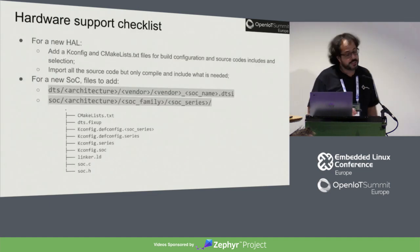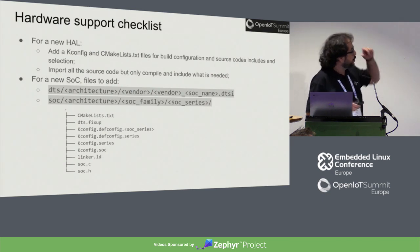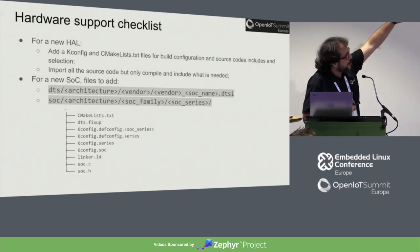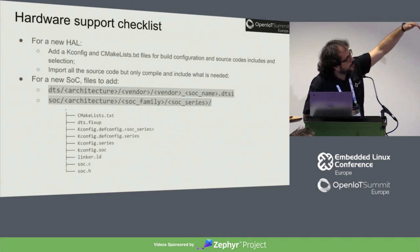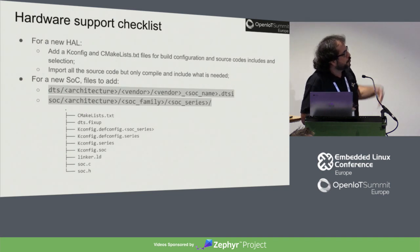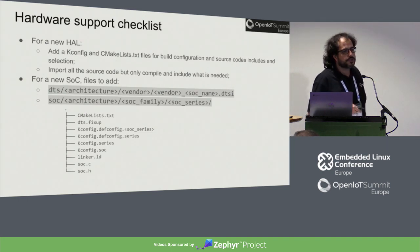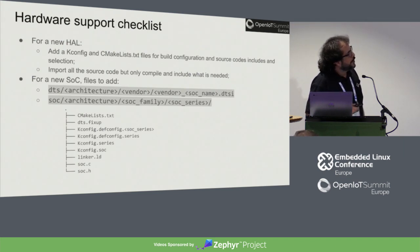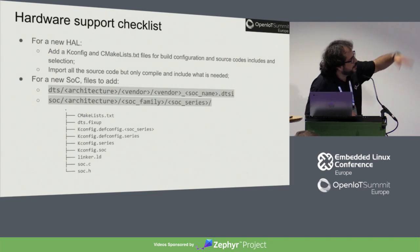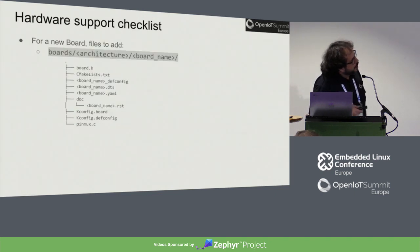This is the hardware support checklist. When adding a new HAL, you need a KConfig file and a CMakeList to include the source code you want — import all the source code but only select and compile what you want. For a new SoC, there is a specific set of files to add. For a new board, there is another set of files. It's a checklist for reference when deciding what to add.